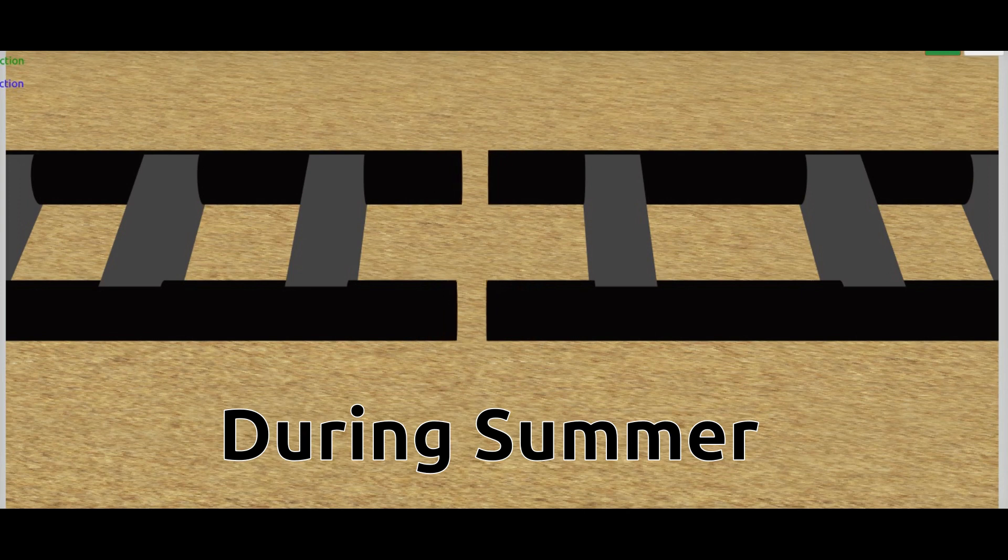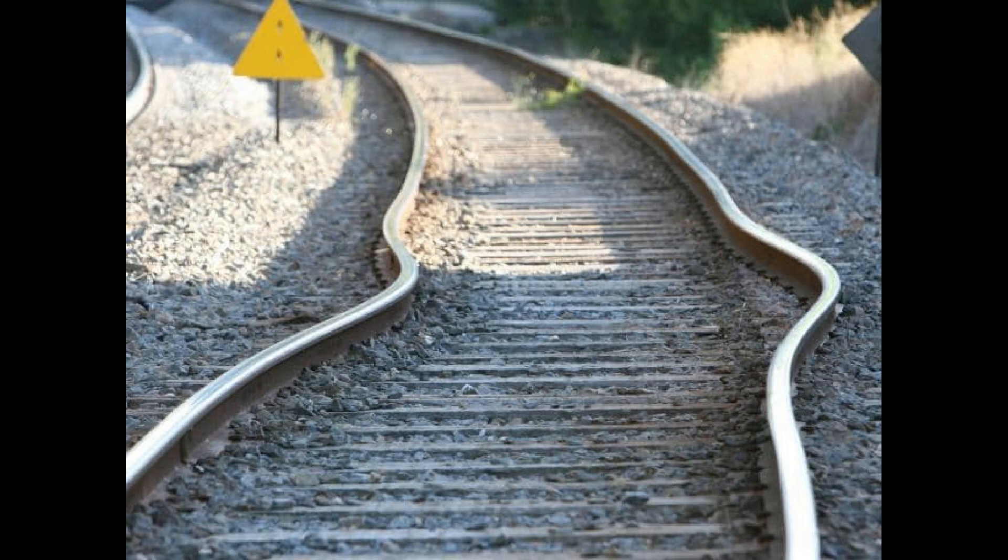In summer, due to high heat, rails expand and fill this space. If the space is not there, then rails will bend and become a cause of derailment.